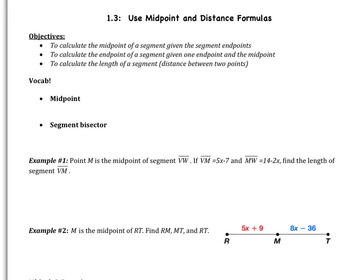Welcome to the third video of chapter 1, which is 'Use Midpoint and Distance Formulas.' You will probably need a calculator for today's video. There are three objectives for today: first, we are going to calculate the midpoint of a segment given the segment endpoints. Then we're going to go backwards and calculate an endpoint given one endpoint and the midpoint. And lastly, we're going to calculate the length of a segment, or the distance between two points. You're going to learn the midpoint formula and the distance formula.